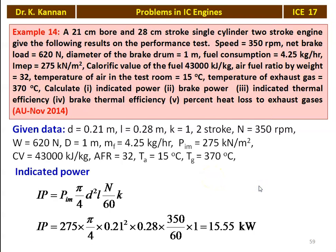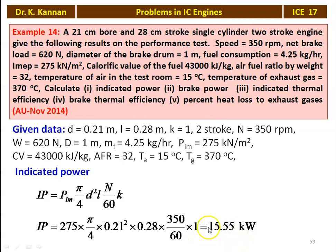We calculate the indicated power: IP = P_IM × (π/4) × D² × L × (N/60) × K. For a two-stroke cycle engine, for every revolution there will be a power stroke, so N/60. Substituting numerical values: 275 × (π/4) × 0.21² × 0.28 × (350/60) × 1 = 15.55 kilowatts.